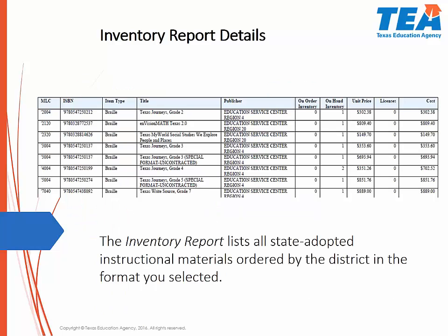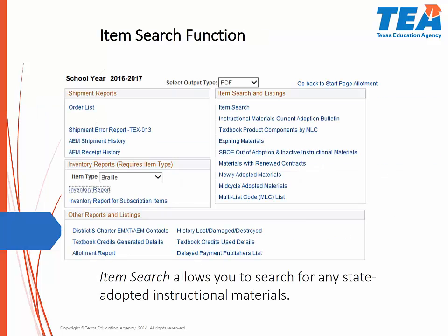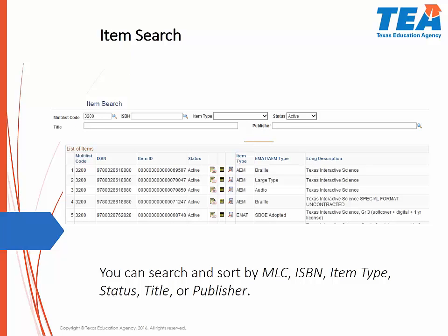The Inventory Report will list all state-adopted instructional materials ordered by the district in the format you selected. If you see any quantities in the On Order Inventory column, check to see if there are any pending shipments from the STRC or another AEM vendor that would need to be received. Another helpful report is the Item Search. You may access this page by going to Reports under AEM on the District Start page. Item Search allows you to search for any state-adopted instructional materials. You can search and sort by MLC, ISBN, Type, Status, Title, or Publisher.